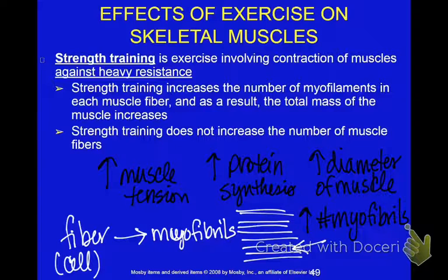Do you get more muscle cells? No, because the number of muscle cells you have is determined by your DNA. Can some people naturally build bigger muscles? Yes, because they may have a different number of muscle cells and so their bodies build muscle more easily.